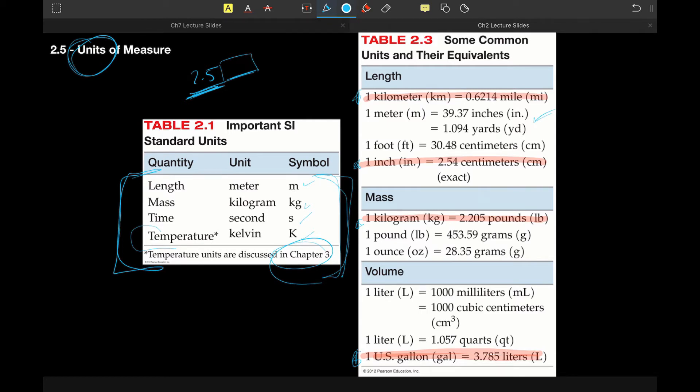And so what this means is that this is a relationship. As in one kilometer is equal to 0.6214 miles. And so I could say one kilometer is equal to 0.6214 miles or 0.6214 miles is equal to one kilometer. It doesn't matter because they represent the same quantity of distance or length.